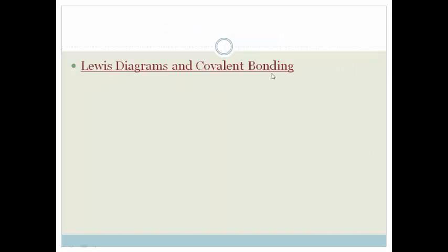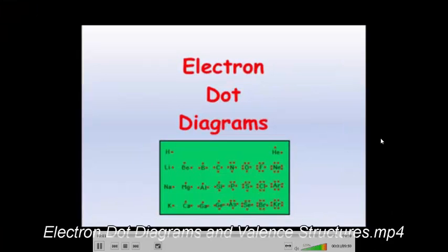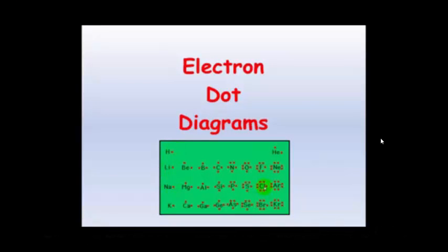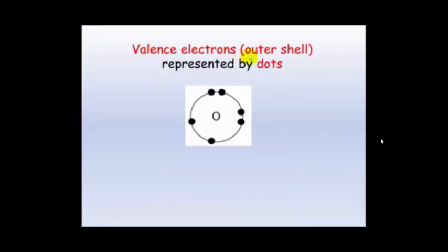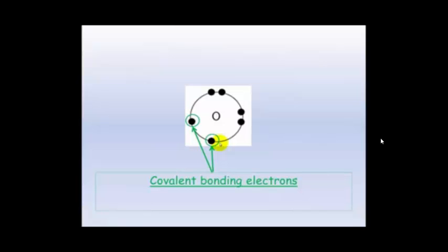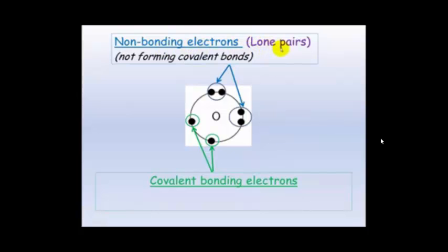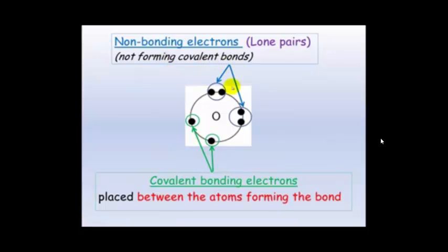So let's watch this excellent video. Electron dot diagrams — they're also called Lewis diagrams. Valence electrons, or the outer shell electrons, are represented by dots, as you can see here with the oxygen. The covalent bonding electrons are these ones here, and the non-bonding electrons are also called lone pairs. These are not forming covalent bonds.